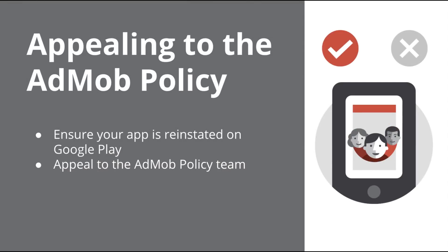Only when the Google Play policy team confirms to you that they have reinstated your app and it is now live on the Play Store should you then file an appeal to the AdMob policy team. You can also find this appeal form linked in our description box. Please ensure to fill in accurate information regarding publisher ID, app ID, and issue ID, which is included in the violation email you would have received. The AdMob policy team will usually review your app within 7 business days and decide whether or not to re-enable your ad serving.